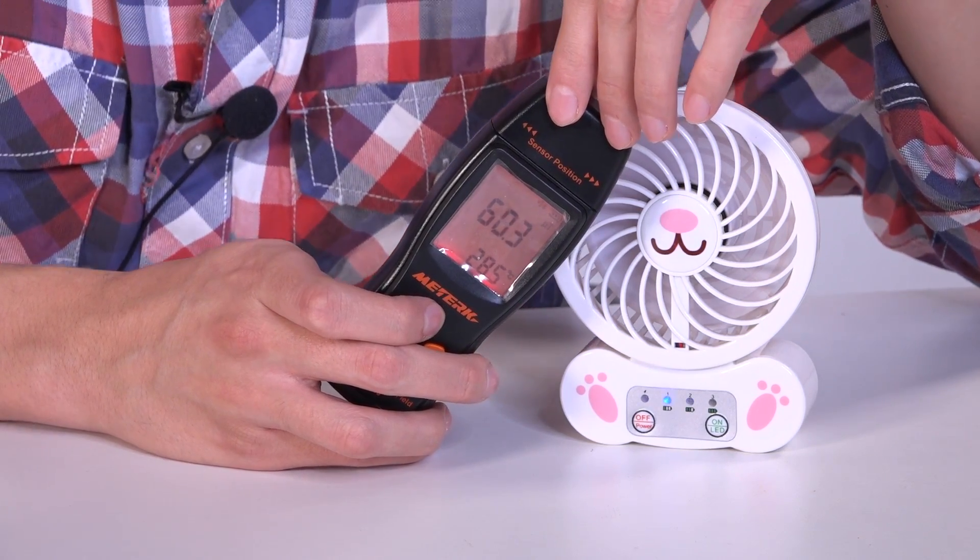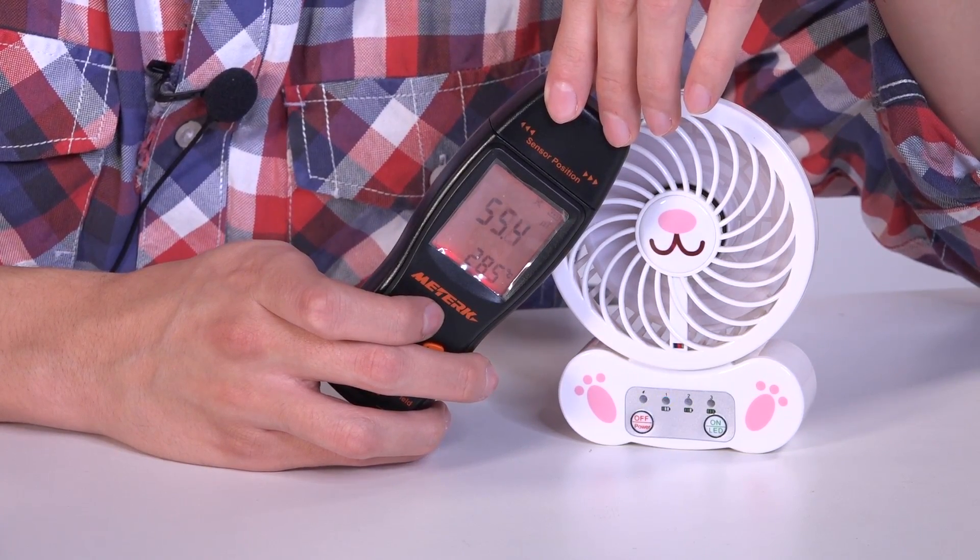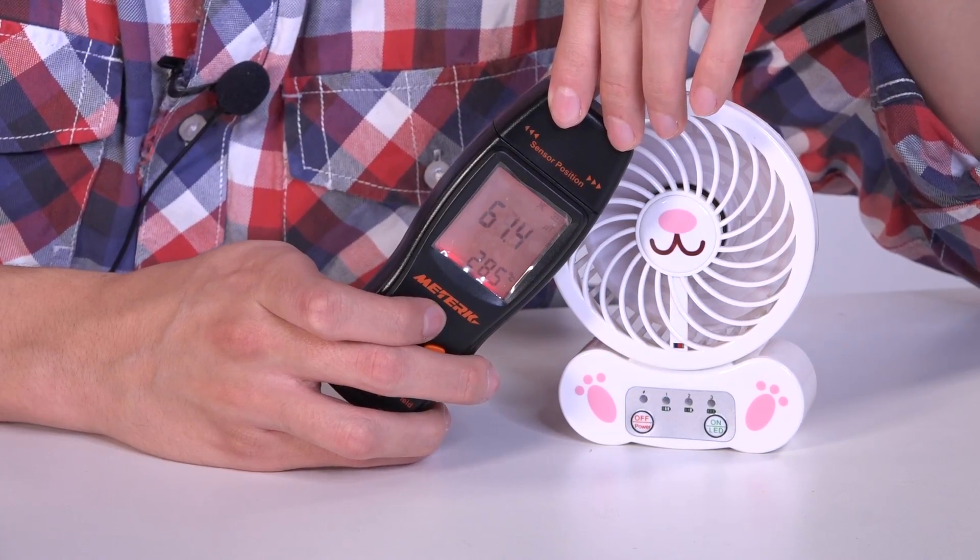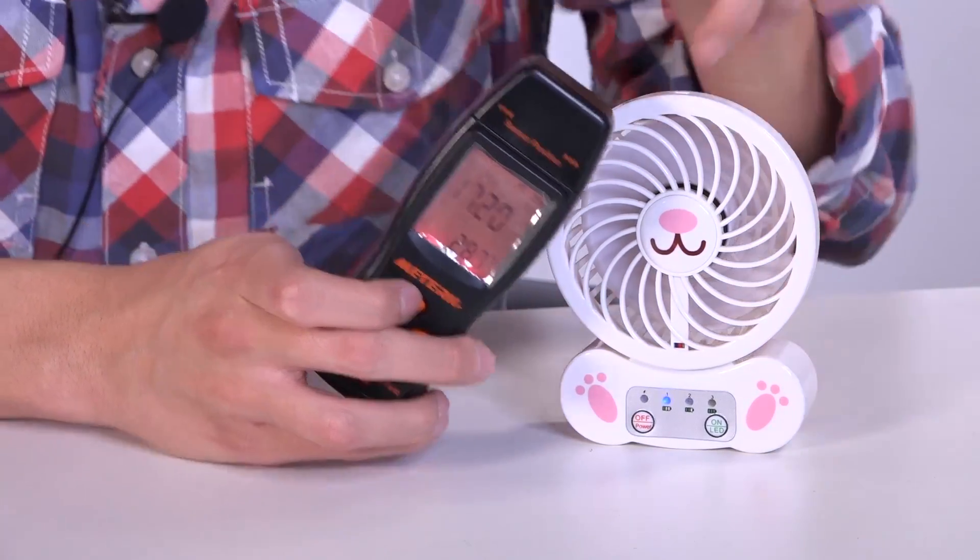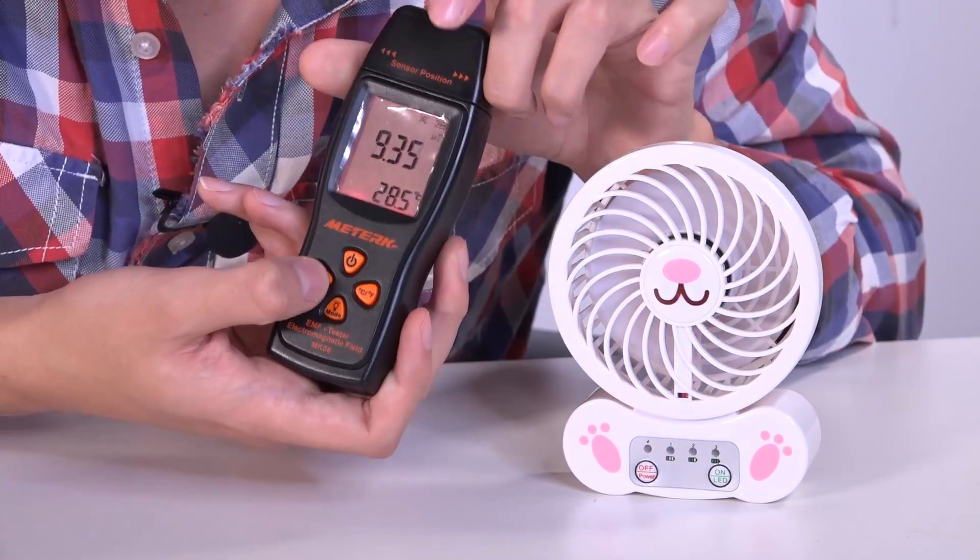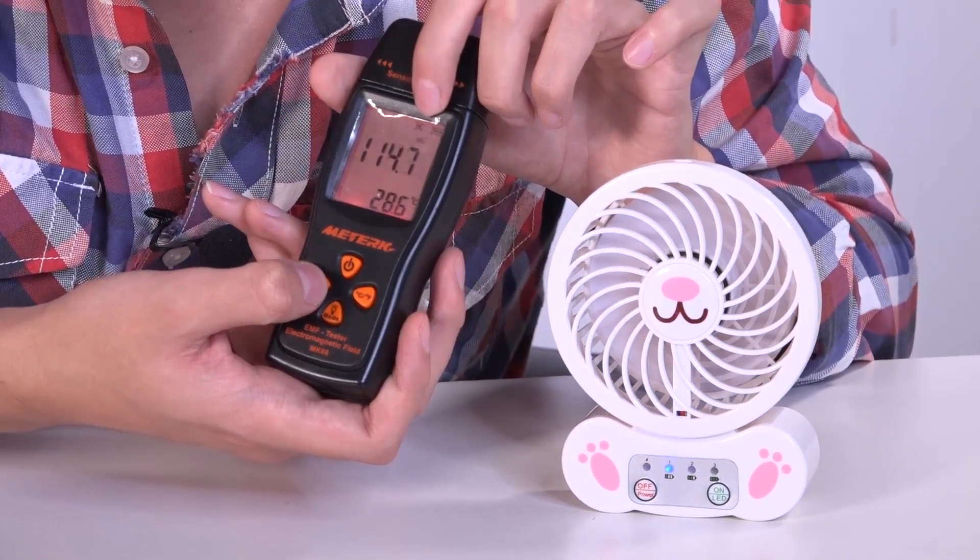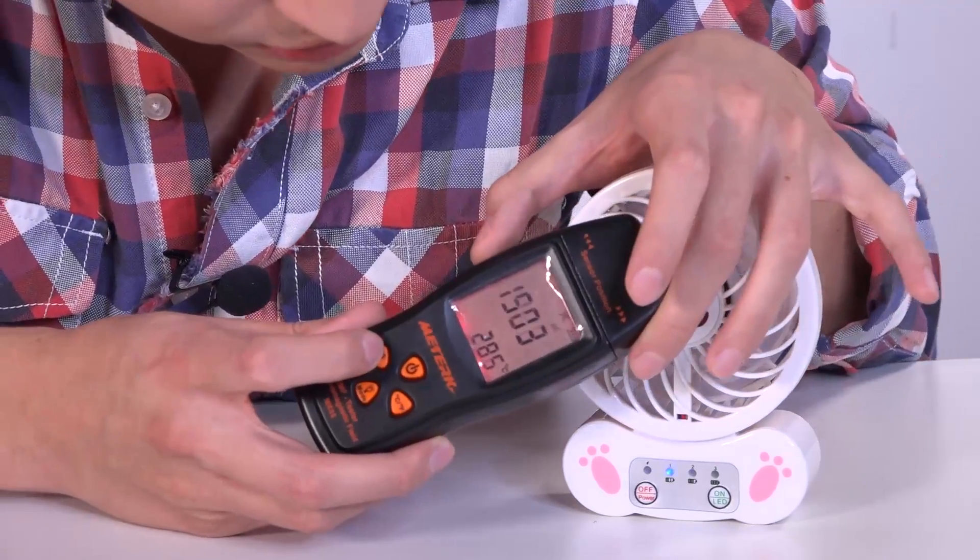Remember, we can mute it. We can do that if you find it annoying just with this button. It's really easy. Or if we want to change to milligauss, we can do it too while measuring.